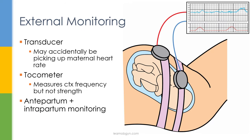There are two ways fetal heart rates can be monitored: external and internal. For external monitoring, two monitors are placed on the mother's abdomen. The transducer uses ultrasound technology to pick up the heart rate, but because both the fetus and the mother have a heart rate, it's possible to accidentally pick up the maternal heart rate. The maternal heart rate is usually much lower, but the best way to differentiate is to have a pulse oximeter on the mother so you can see two distinct heart rates simultaneously.